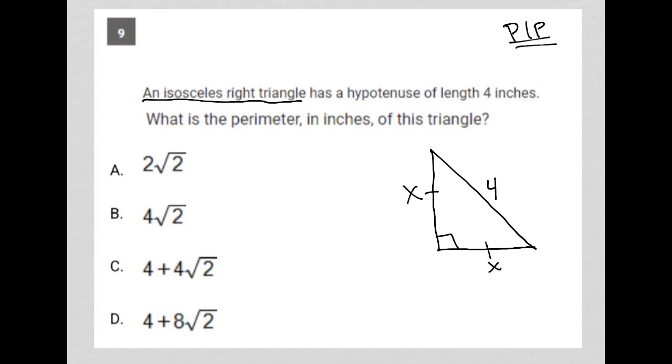I know, I've memorized this, but this is also in the given information on the first page of your math section. When you have an isosceles right triangle, the sides are x, x, and x root 2.